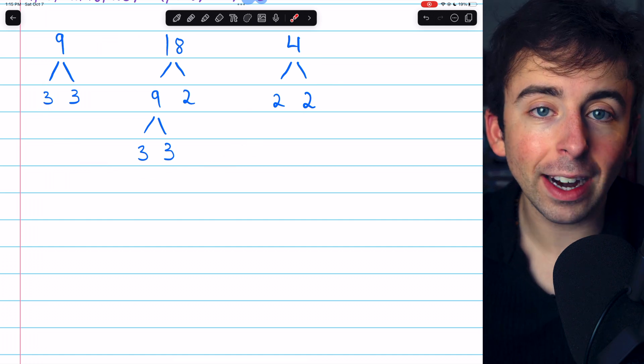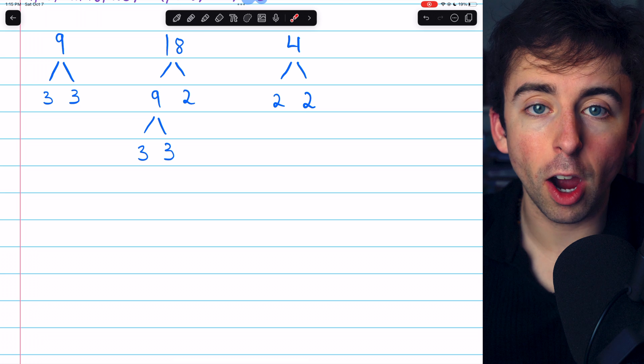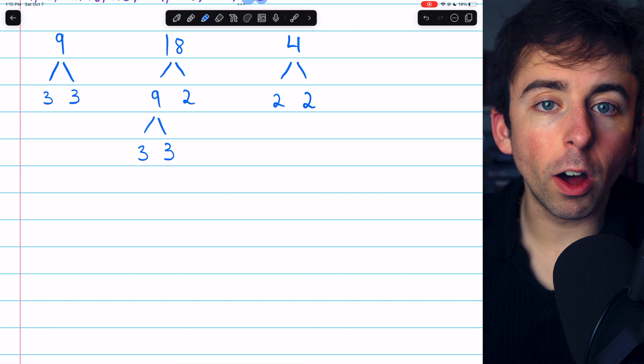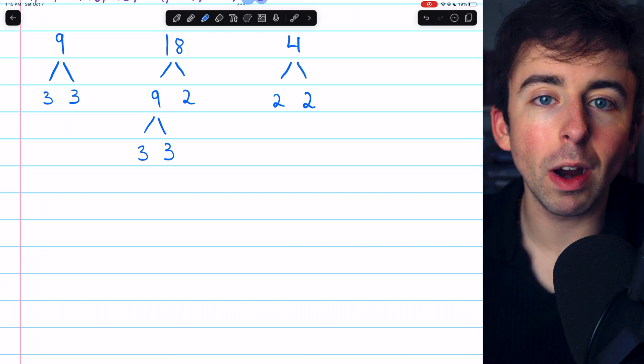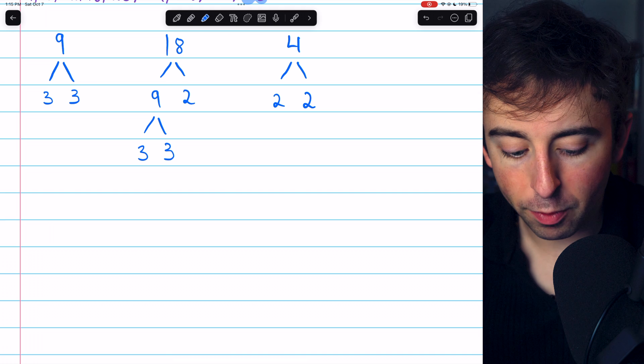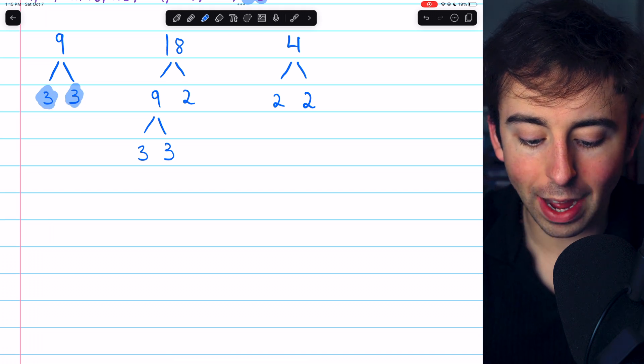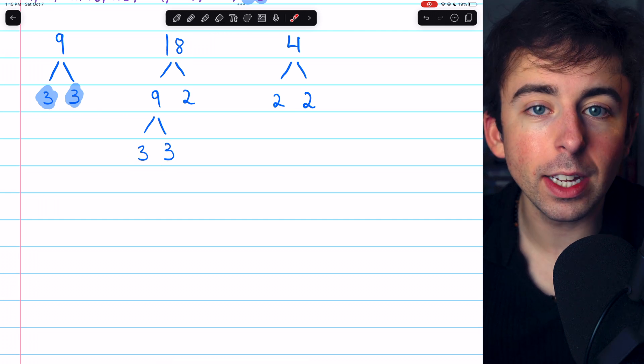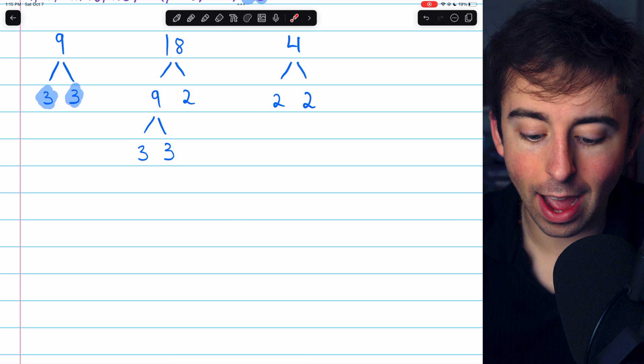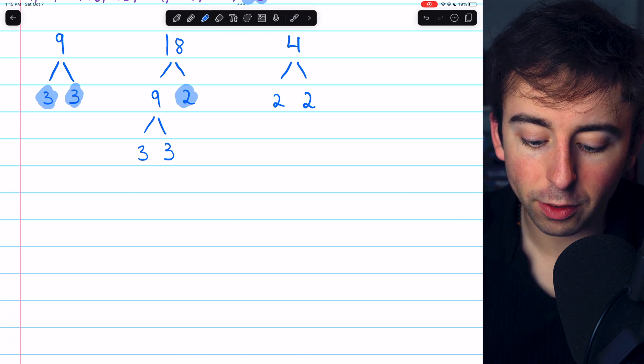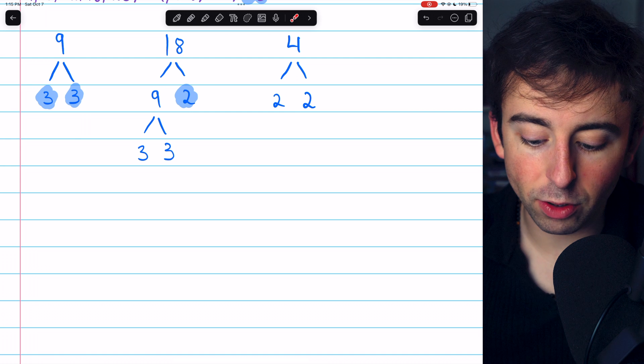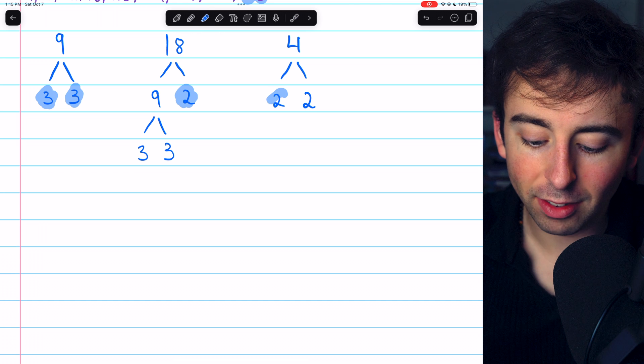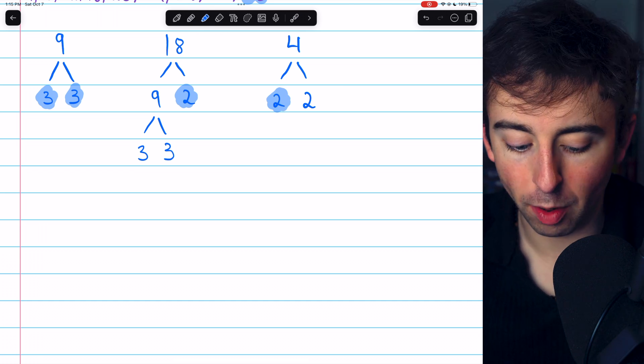So these are the factor trees. And we can use these to find the least common multiple. To find the least common multiple from the factor trees, we just need to take all of the unique prime factors, including repetition. So for example, from 9, I see that we're going to need 2 factors of 3. From 18, we will need 2 factors of 3. But we already have 2 factors of 3 from the 9. We'll also need a factor of 2. From the 4, we're going to need 2 factors of 2. But we already have 1 factor of 2 from the 18. So we'll only need 1 factor of 2 from the 4.